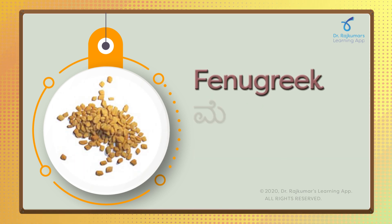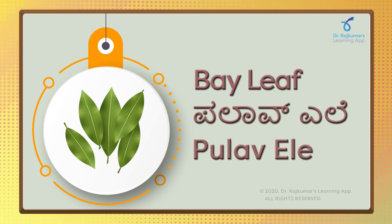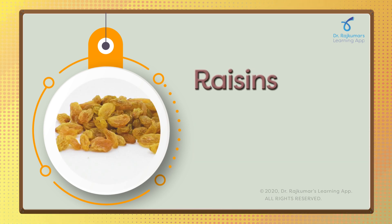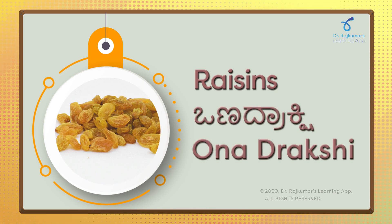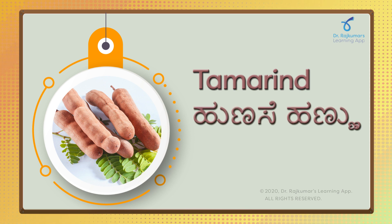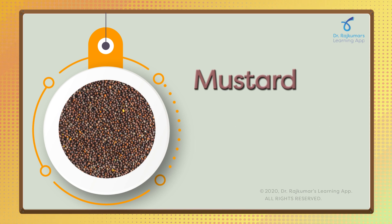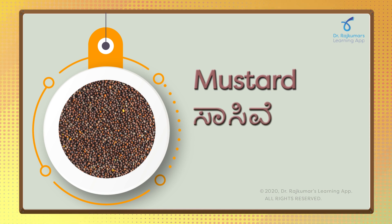Fenugreek — Meintia. Bay leaf — Pulao ele. Raisins — Onadrakshi. Tamarind — Honase hannu. Mustard — Saasive.